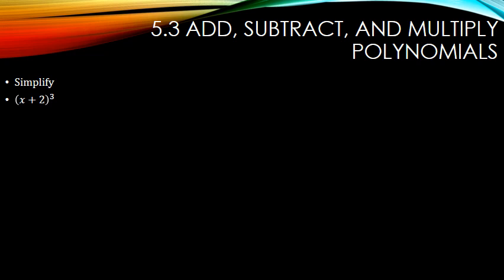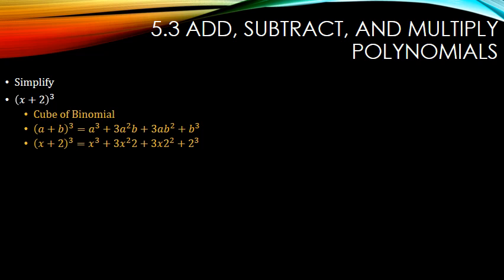So this one looks like it's a cube of a binomial. That formula is adding, so we're going to use the pluses: (a plus b)-cubed equals a-cubed plus 3a-squared·b plus 3ab-squared plus b-cubed. In this case, a is x and b is 2. So we replace a with x and b with 2, and then simplify with 3 times 2, 3 times 2-squared, and 2-cubed.